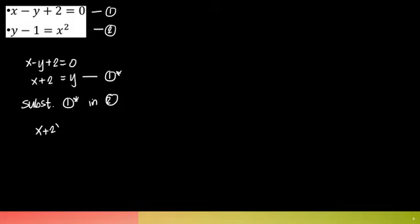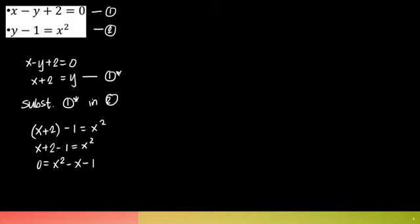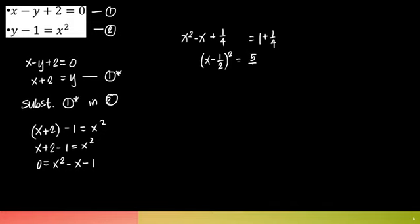So x minus y plus 2 equals 0. If I isolate y, that gives y equals x plus 2. Let's call this one asterisk — it came from equation one — and substitute one asterisk into equation number two. You'll end up with x plus 2 minus 1 equals x squared, which simplifies to x plus 1 equals x squared. Moving everything to one side: x squared minus x minus 1 equals 0. This equation is not factorable, so we use either completing the square or the quadratic formula. Let's do completing the square.